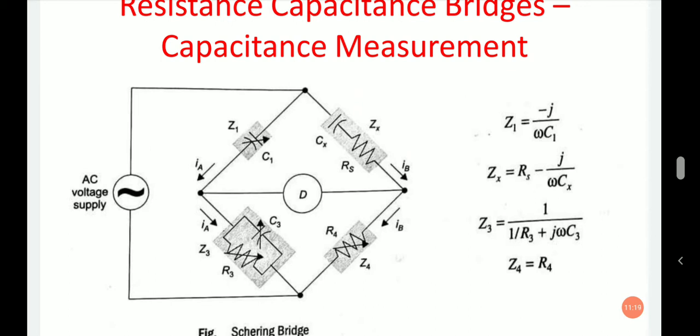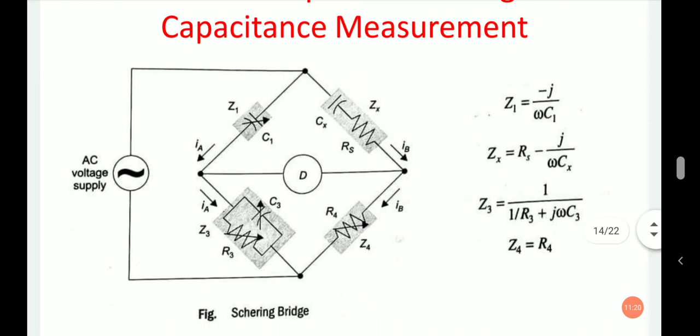We will now see the next bridge: the Schering bridge circuit. The Schering bridge circuit is basically a modification of the series resistance-capacitance bridge, or series RC bridge.